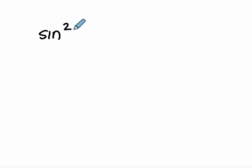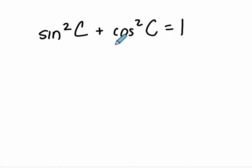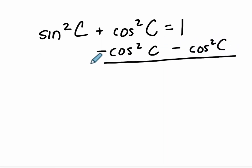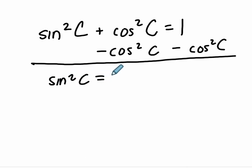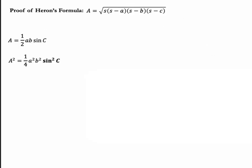Sine squared of c plus cosine squared of c equals one — this is our Pythagorean identity. If we subtract cosine squared c on both sides, we get that sine squared of c equals one minus cosine squared of c. So we can use that substitution.